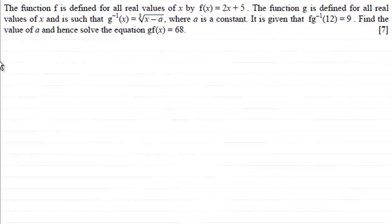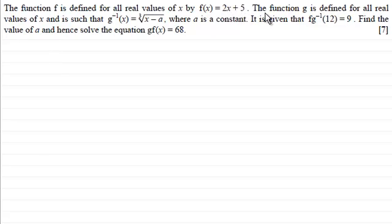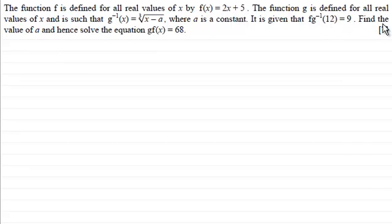In this question, we're given the function f, which is defined for all real values of x by f(x) = 2x + 5. The function g is defined for all real values of x, and is such that the inverse function g⁻¹(x) equals the cube root of x minus a, where a is a constant. It is given that fg⁻¹(12) = 9. We're going to find the value of a, and hence solve the equation gf(x) = 68.